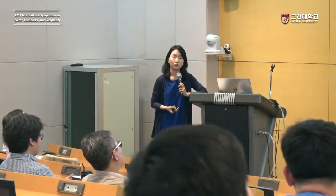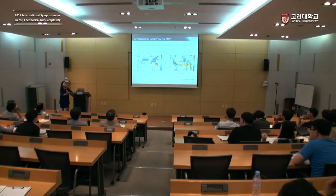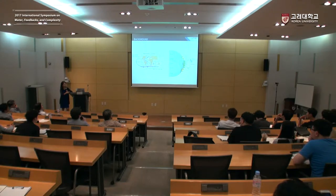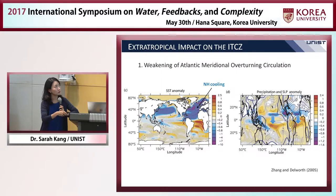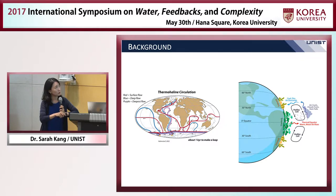Now let me convince you that the extratropics, far from the tropical region, is really important for understanding the ITCZ location. In this paper, the authors dumped freshwater in the Northern North Atlantic, making the water less dense. This weakened the thermohaline circulation, reducing the northward energy transport by the ocean and making the Northern Hemisphere extratropics cooler. What they then observed is that tropical precipitation shifted southward — even though the forcing was far from the tropics, there was a very large response in the tropics.